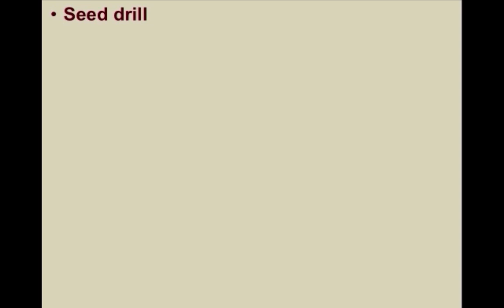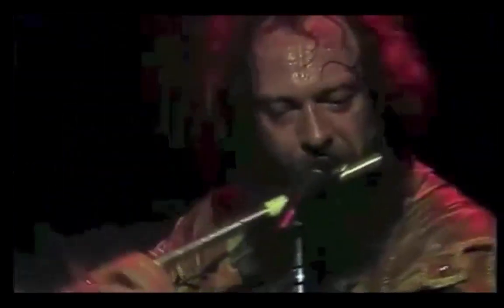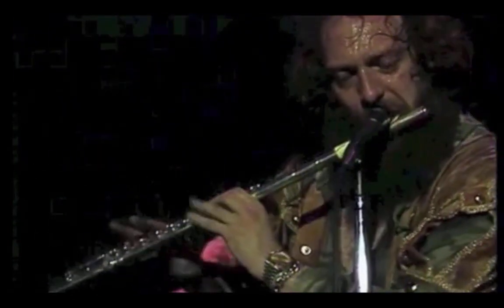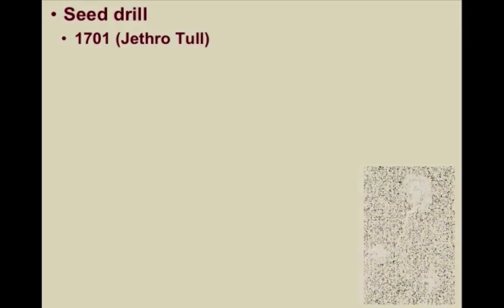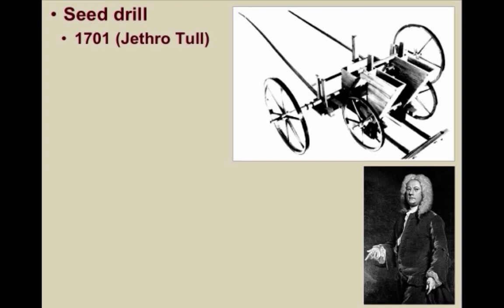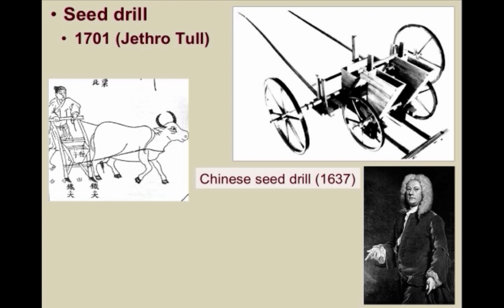Another innovation that revolutionized agriculture was the seed drill, improved and perfected in 1701 by Jethro Tull — not the rock band. Jethro Tull helped make it possible to sow seeds in neat rows, making the germination of the seeds more likely and enabling farmers to more easily tend and cultivate their crops. Bear in mind, the seed drill was not all that new, but once it made its way to Britain especially, the Second Agricultural Revolution really took off. Tull's methods were adopted by many large landowners and truly helped form the basis of modern agriculture.